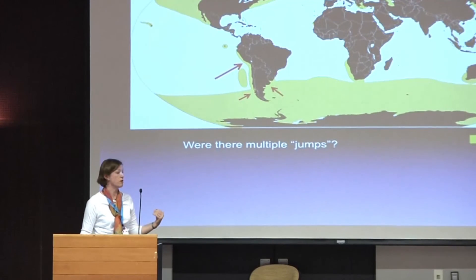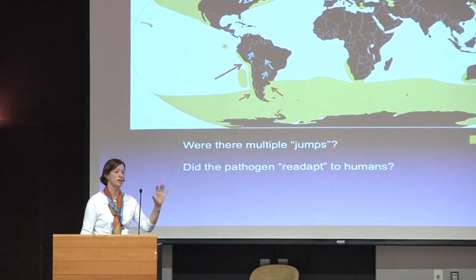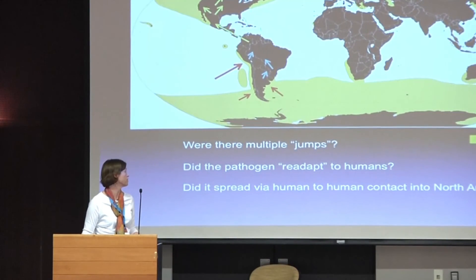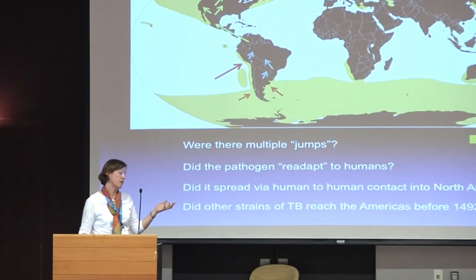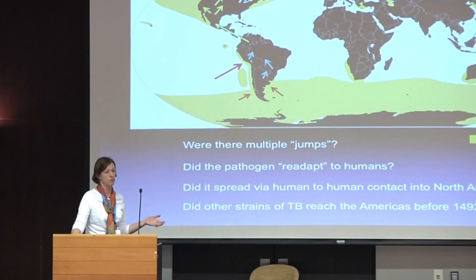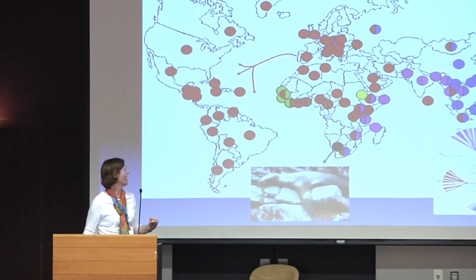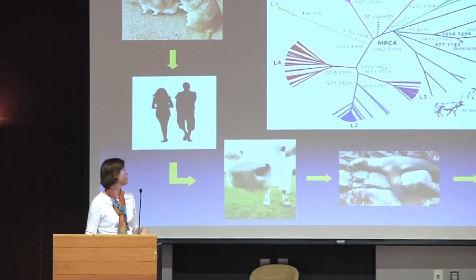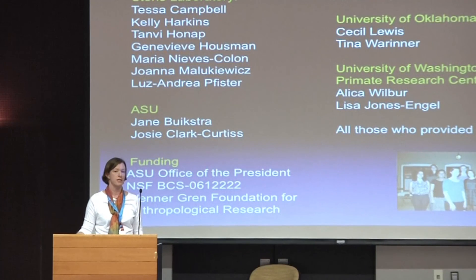Currently we're targeting whether there were multiple jumps, and whether the pathogen shows evidence of readaptation to humans. We do see five non-synonymous SNPs that differentiate the human strains from the M. pinnipedi strains. Did it spread via human-to-human contact into North America? We are expecting new samples from North America, so I'm very excited. Another possibility is whether TB reached the Americas before 1492 through other means — I'm going to be getting some cheek swabs from Antarctic seals shortly. But then we think after Columbus, these more virulent strains were the ones that replaced the earlier ones. And with that, I will thank my many collaborators.